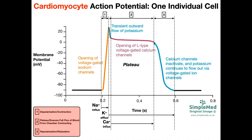At some point the calcium channels close, but the potassium channels are still open. Calcium no longer influxes, but potassium is still effluxing. Losing positive charges makes the cell more negative, and this potassium efflux eventually brings the cardiomyocyte back to resting membrane potential. This phase — from when the calcium channels close to the return to resting membrane potential — is the repolarization phase, or the relaxation of the heart.